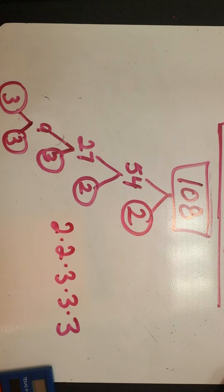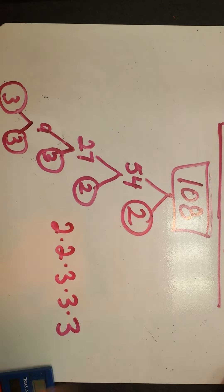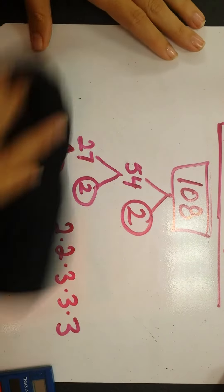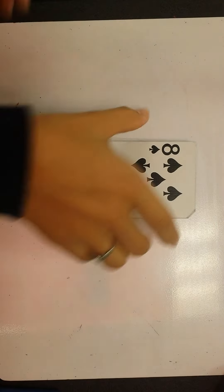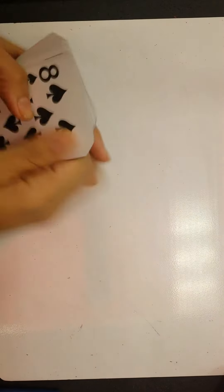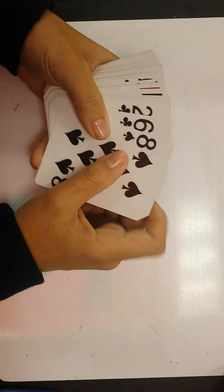Are there any other numbers except for one and seven that go into seven? No. Any other numbers except one and eleven that go into eleven? No. That means these are your prime factorizations because the only thing that goes into them is themselves and one. So that's how you break down 77.